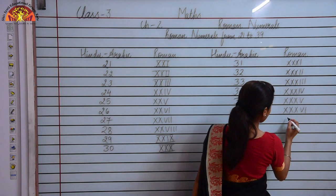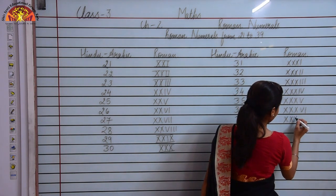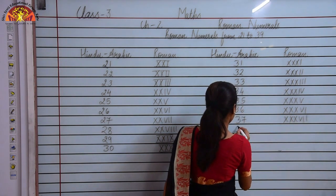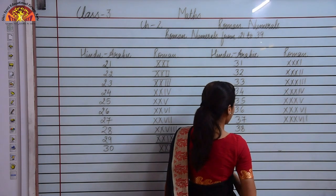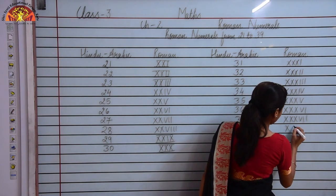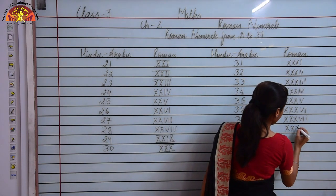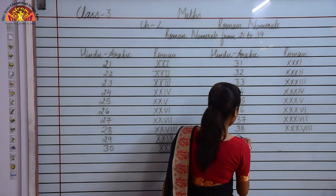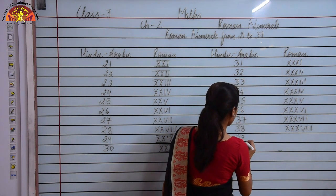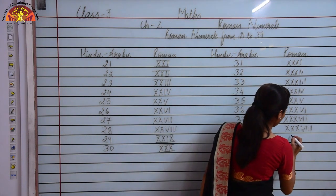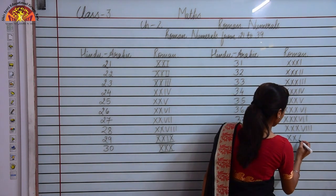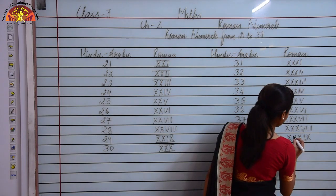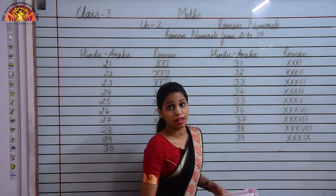Similarly to write 37 I will write XXX and then add VII to it. To write 38 I will write XXX and then add VIII to it. Now the last one — to represent 39 I will write XXX and then add IX to it. So this represents 39.